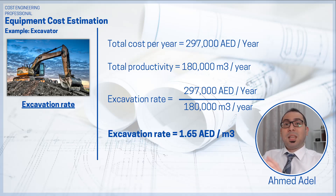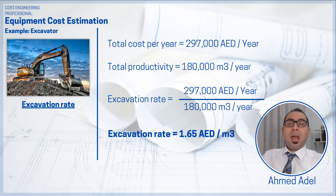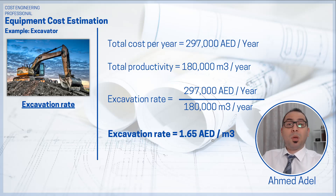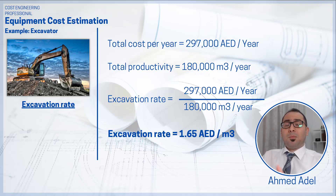The same concept applies to other equipment, for example a three-ton pickup truck. You calculate how much it costs per year and how many trips it can make per year, then divide to get the cost per trip — just as we got dirhams per cubic meter here. This gives you a rate in whatever unit of measurement applies: dirhams per square meter, per trip, or any other unit.